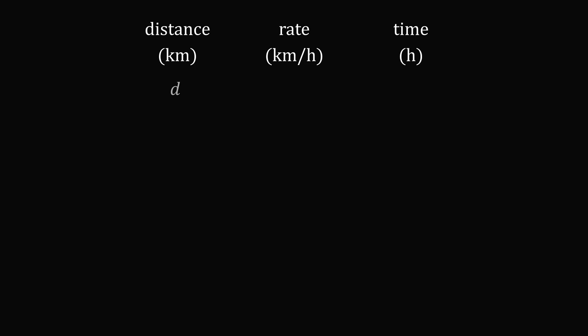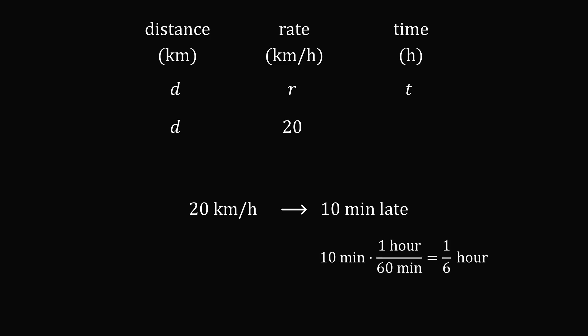Let's say the distance is an unknown constant d. If he travels at some rate r, he will arrive exactly on time in t hours. We are given that if he goes at 20 kilometers per hour, he ends up 10 minutes late. Converting 10 minutes to hours: since there are 60 minutes per hour, 10 minutes equals 1/6 of an hour. Since he ends up late, we add this, so the time taken is t + 1/6.